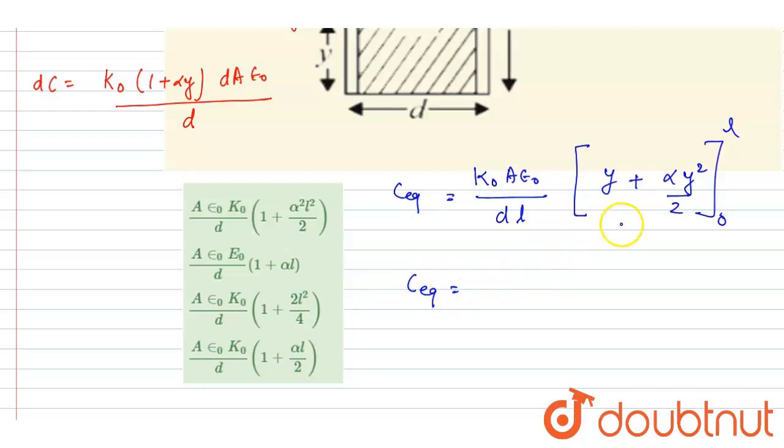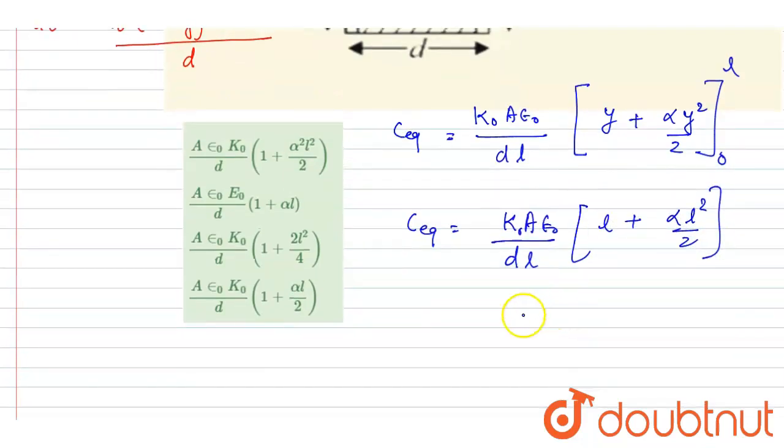Since at 0 it equals this, at l I will write K₀ε₀A/dl times (l + αl²/2). Take l common and you will reach your answer: ε₀A/d, l will get cancelled out, (1 + αl/2).